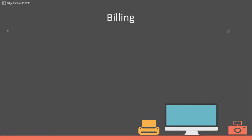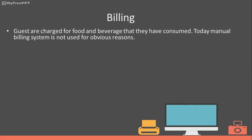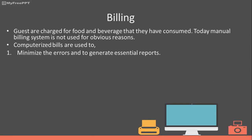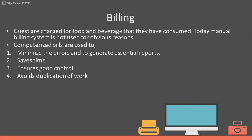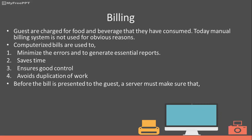When we talk about billing, guests are charged for food and beverage that they have consumed in an outlet. Today, manual billing systems are not used for obvious reasons. Computerized billing is convenient because it minimizes errors and generates essential reports. It saves time, ensures good control, and avoids duplication of work. Before the bill is presented to the guest, a server must make sure that all food and beverage items are charged for — that is the most essential part.